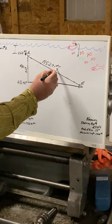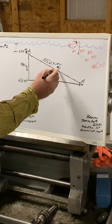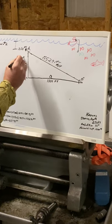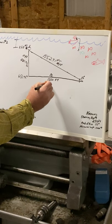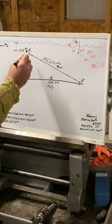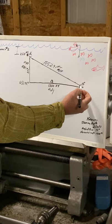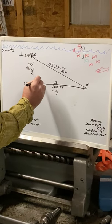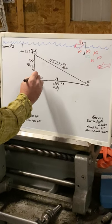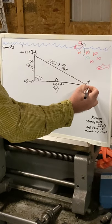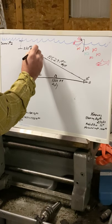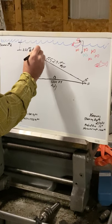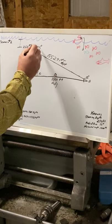So that's my hypotenuse, this is my opposite, this is my adjacent. This would be my angle A, which is 90 degrees. This is my angle B, which is 15 degrees. Angle C would be 75 degrees.